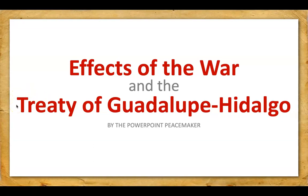The other day you learned about the Mexican War. We talked about the effects of the Mexican War, the results, the Treaty of Guadalupe Hidalgo, the Mexican Cession, and a little bit about the Compromise of 1850. But today we're going to backtrack and talk about the effects of the war — the effects of the Mexican War — and deep dive into the Treaty of Guadalupe Hidalgo a little bit more.